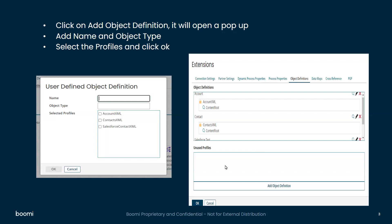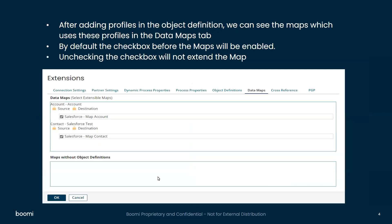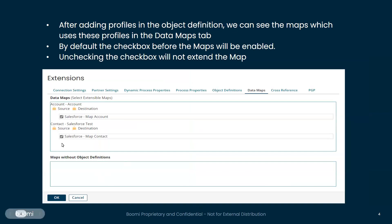After clicking OK, now go to Data Maps. Here you can see all the maps that use these profiles are added as extensions in the Data Maps tab. You can see a checkbox here — by default, this checkbox will be enabled. If you don't want to use any map as an extensible map, you can uncheck this particular checkbox. You also have another option, which is locking the fields of the source profile and the destination profile.